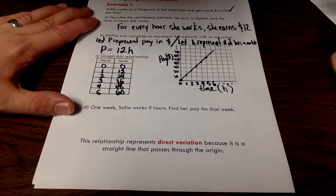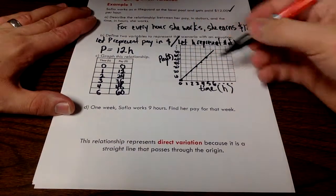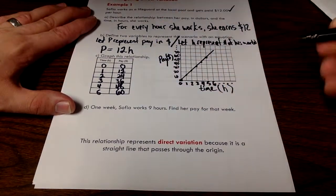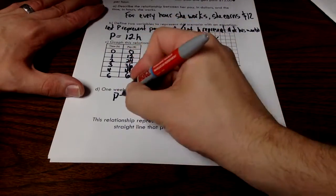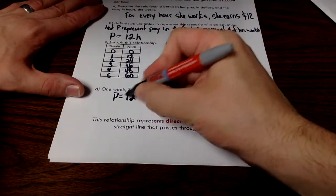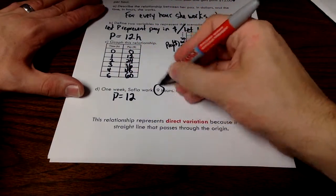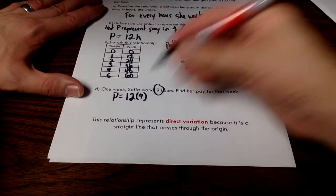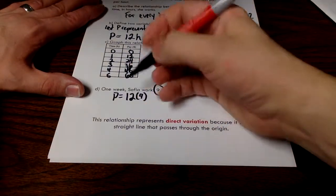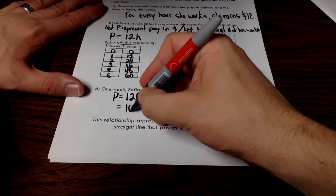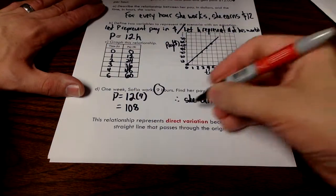What I want to do next is look at, let's say that this person worked nine hours. I could keep going on my table of values. The easiest way to come up with this value is to just use my equation. So if I have pay equal to 12h, in this case, my h is nine. I'm just substituting nine into my equation, and that's going to tell me how much money this person is making. We'll get $108 for nine hours of work.